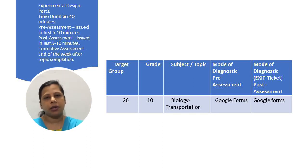In the first experimental setup, I had taken a target group of students whose number was 20. They were from grade 10. The subject was biology and the topic was transportation in humans. For this group, I have given pre-assessment, a Google form, and then after explanation of the topic, I have given them in the end an exit ticket or post-assessment. This I continued for a period of one week. At the end of the week, I issued them another Google form with formative assessment.